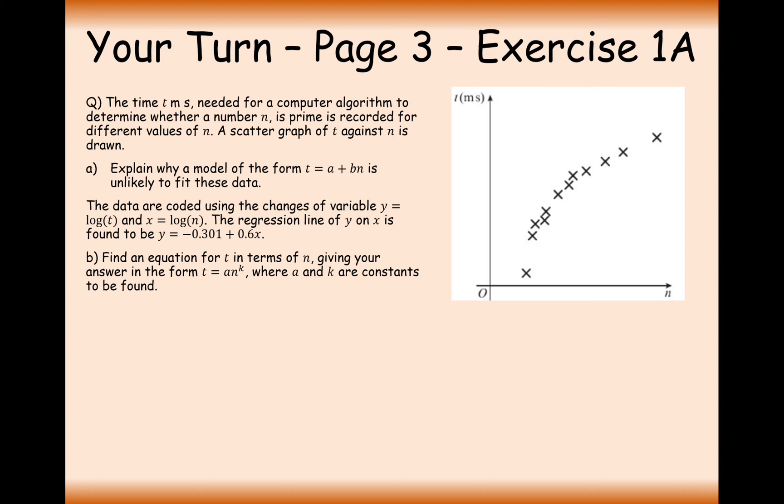Your turn to have a go at this question. Pause the video and try this question out. Here we have time in ms needed for a computer algorithm to determine whether a number n is prime. A scattered graph of t against n is drawn. Explain why a model of the form t equals a plus bn is unlikely to fit this data. It looks like it's a curvy set of data, and basically that's what you need to describe. The data is non-linear.